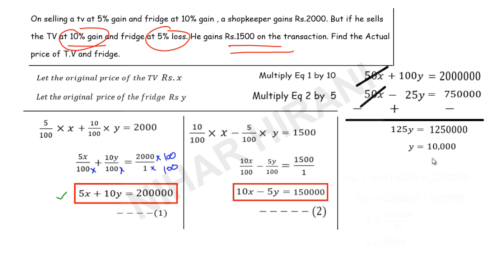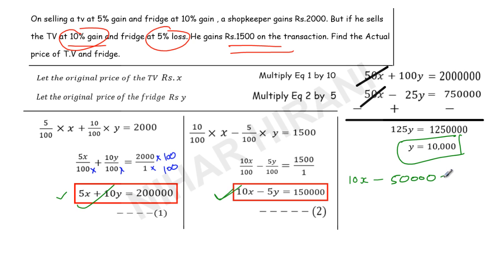To get the value of y I divide by 125, which gives y equals 10,000. So the price of the fridge is Rs. 10,000. Now I substitute this value back into one of the equations. Using Equation 2: 10x minus 5 times 10,000 equals 1,50,000. That gives 10x minus 50,000 equals 1,50,000. Taking 50,000 to the other side: 10x equals 2,00,000, so x equals 20,000.